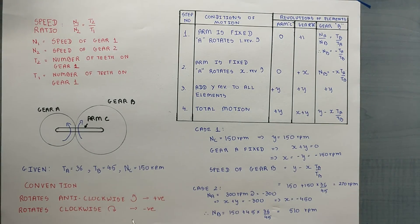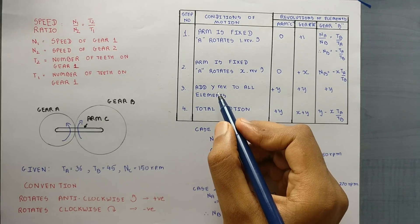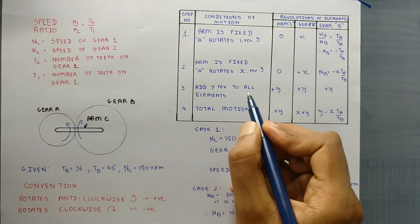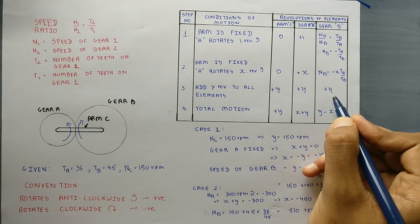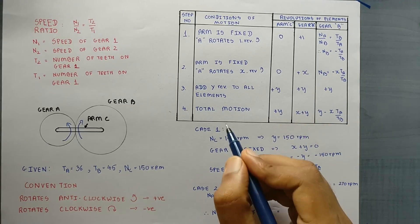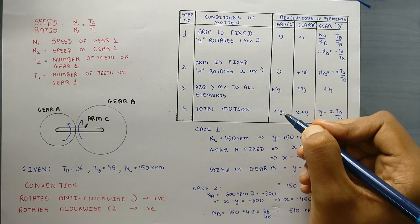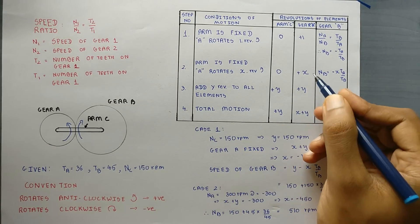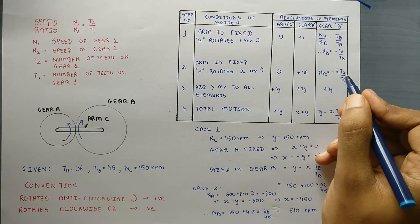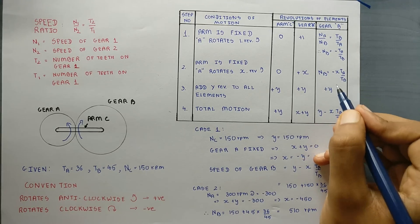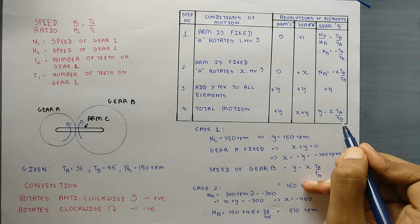Since according to the convention, clockwise direction is taken as negative. Now we add Y revolutions to all elements: +Y, +Y, +Y. So the total motion becomes: arm C = 0 + Y = +Y, gear A = X + Y, and gear B = minus X times TA by TB plus Y, which equals Y minus X times TA by TB.